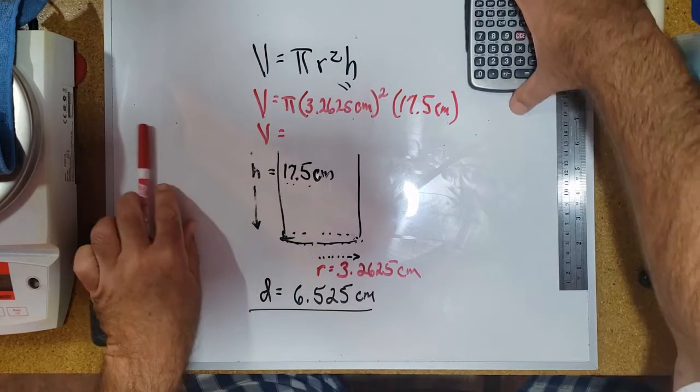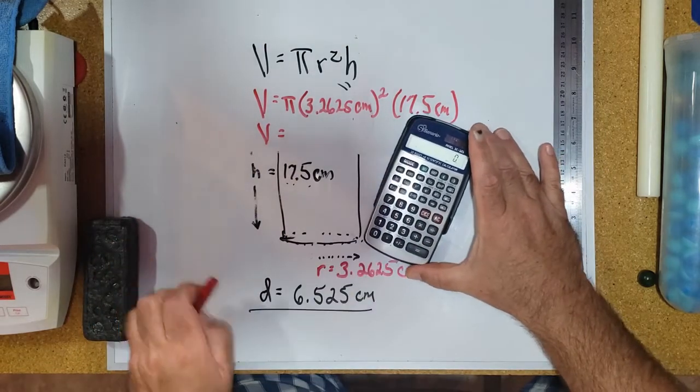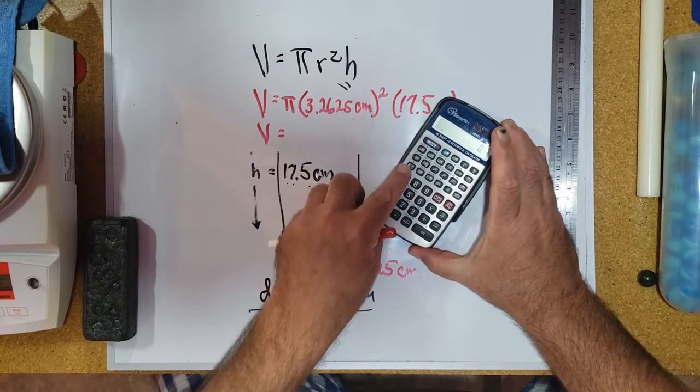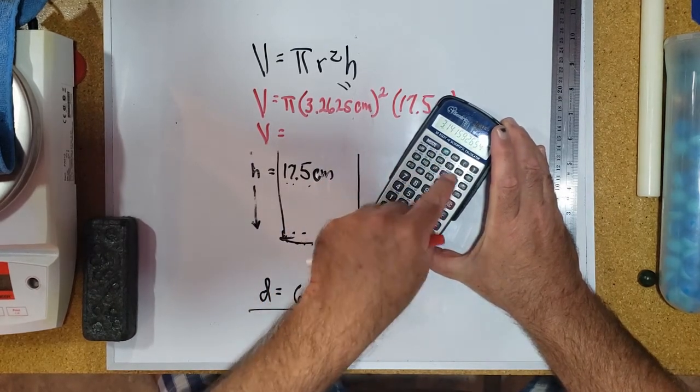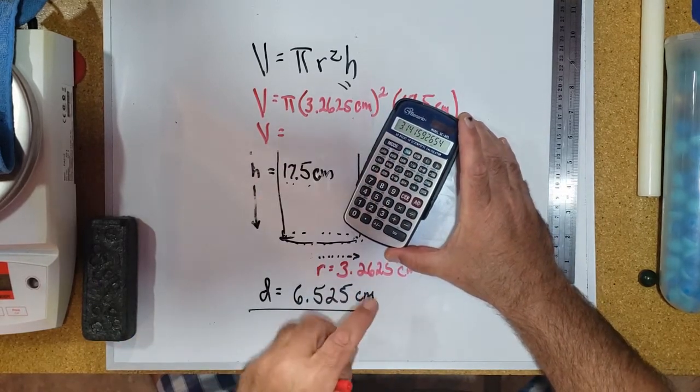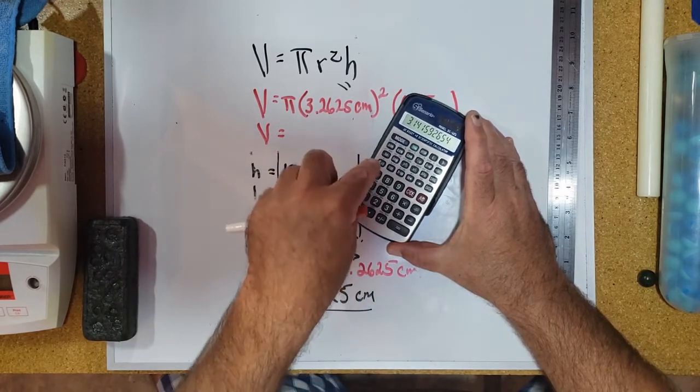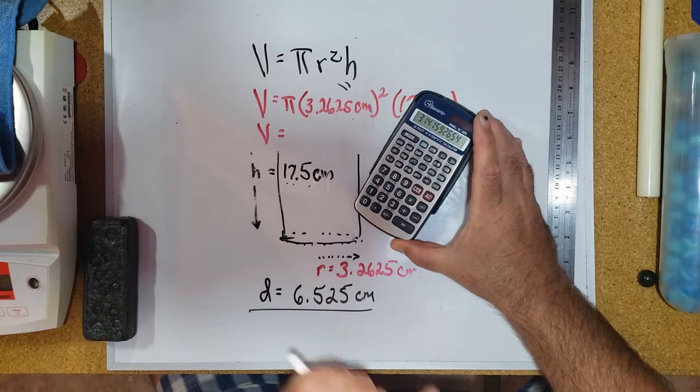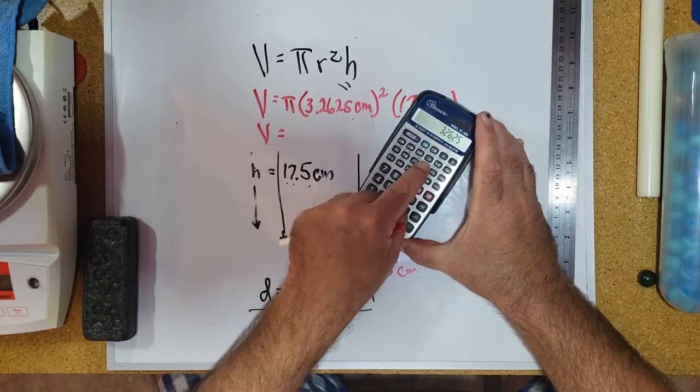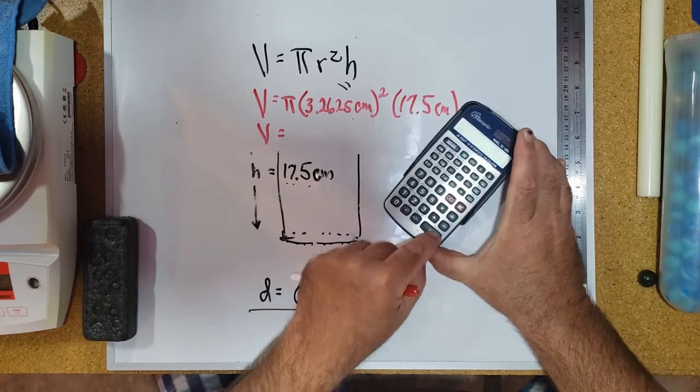Let's go ahead and put this all into our calculator here. Now on this particular calculator, there's a π symbol right above this key. I have to access it by hitting this inverse key on this calculator. So there's π—notice it's like nine or ten digits, that's what you'd prefer to do. Don't put just 3.14 in there, use the π button on calculator. Multiply by 3.2625 and hit the square key, times 17.5, equals.